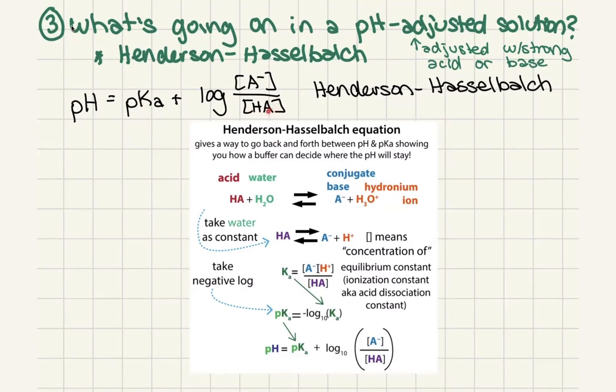And so we're going to have protons that are given both from the initial acid we dissolved as well as from whatever acid we're adding. And so we're going to have to take into account both of those. And then that's going to basically affect the ratio of our acid and our base. But that ratio is still going to depend on the pKa.